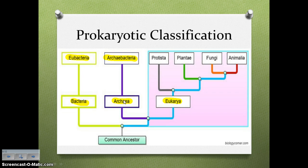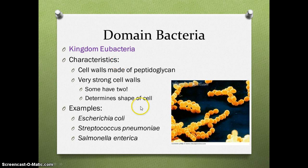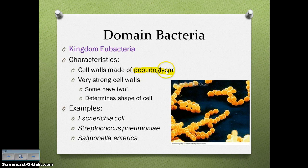Reviewing what you learned back in classification, there are three domains of living organisms: Bacteria, Archaea, and Eukarya. We are going to be focusing on the two prokaryotic domains. The domain Bacteria has the kingdom Eubacteria. The domain Archaea has the kingdom Archaebacteria. We're going to start with domain Bacteria. A major characteristic of organisms in this kingdom is that they have cell walls made of peptidoglycan, which makes the cell walls very strong. That determines the shape of the cell, which is how we classify the organisms in this kingdom.